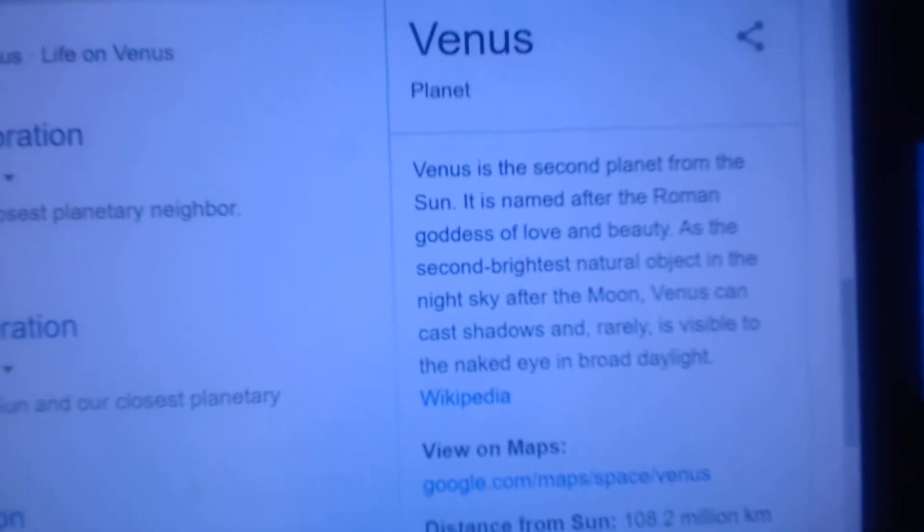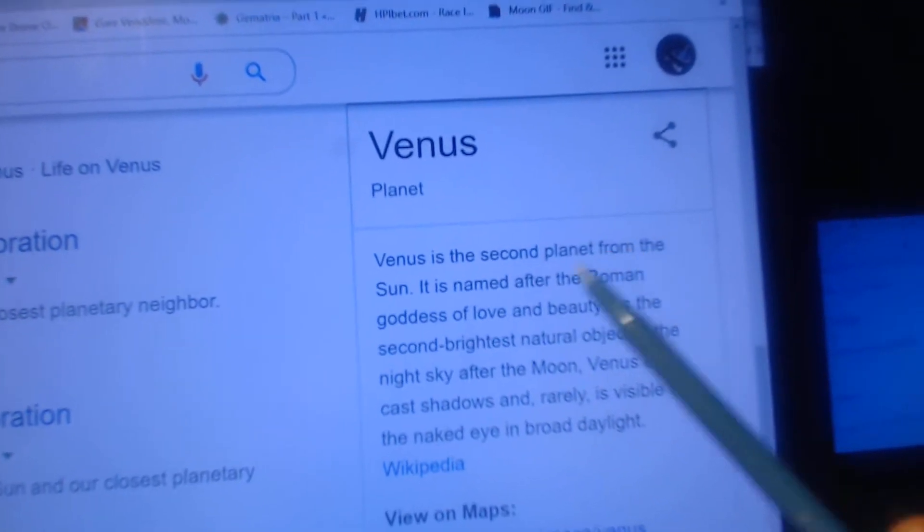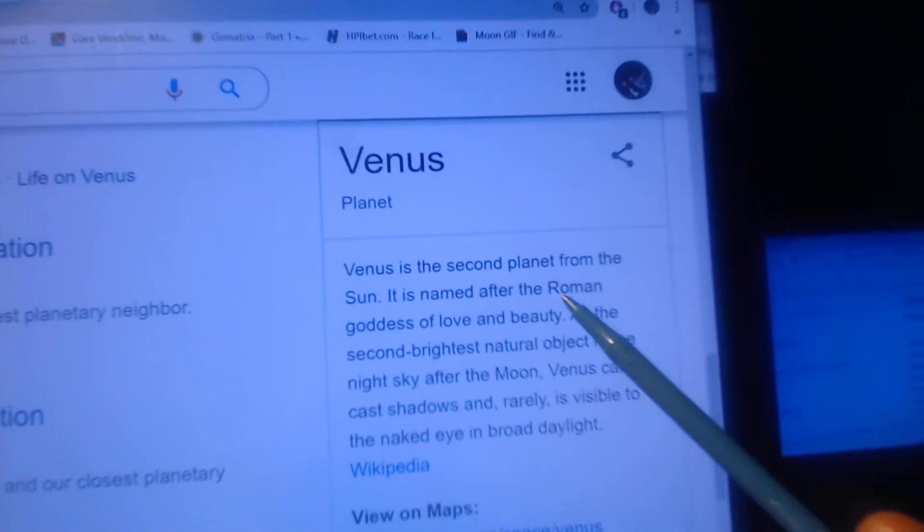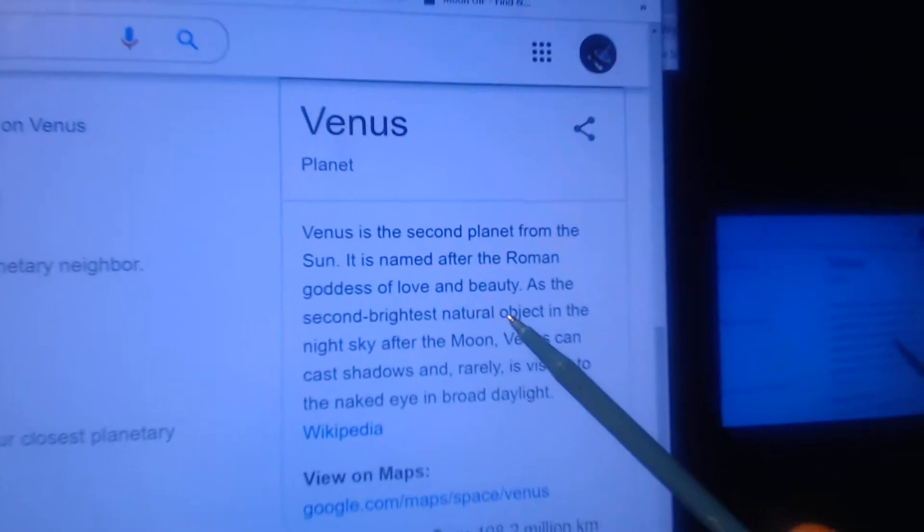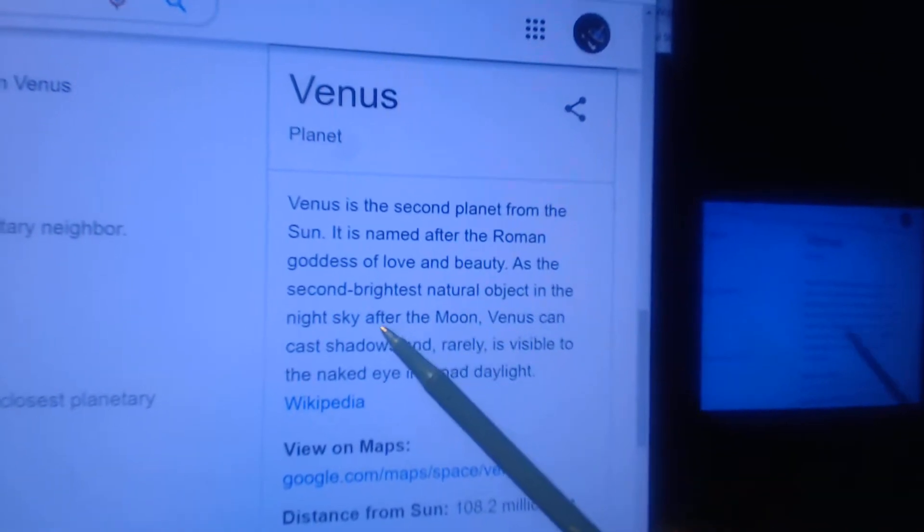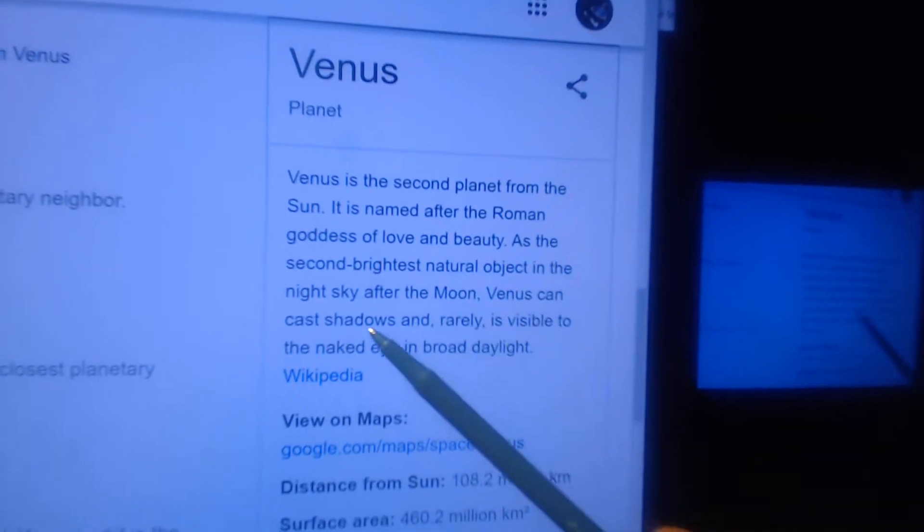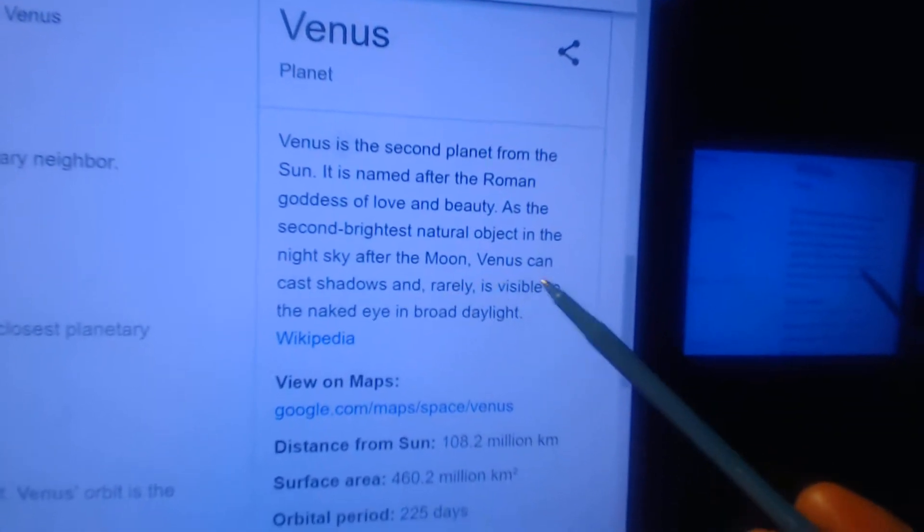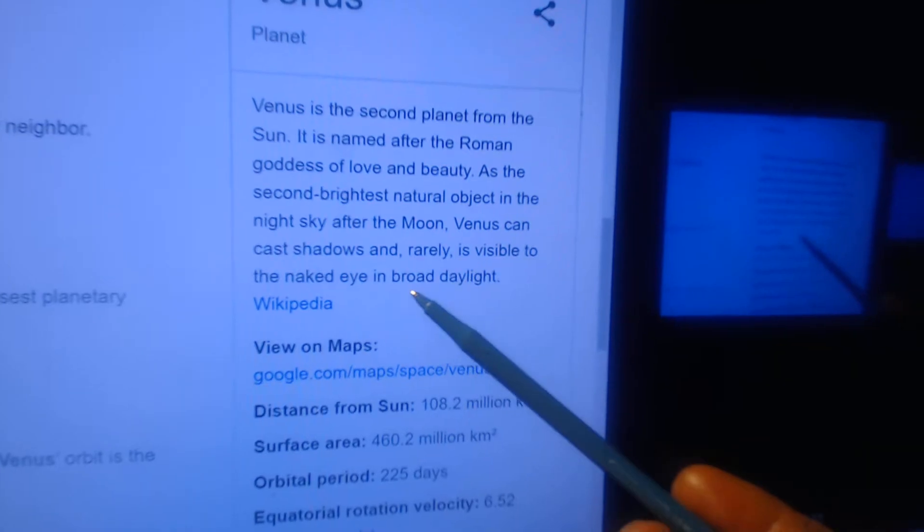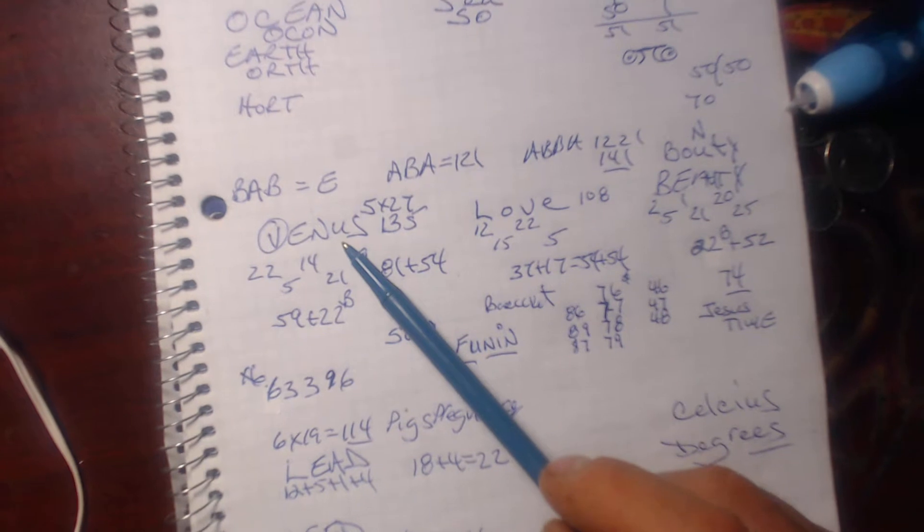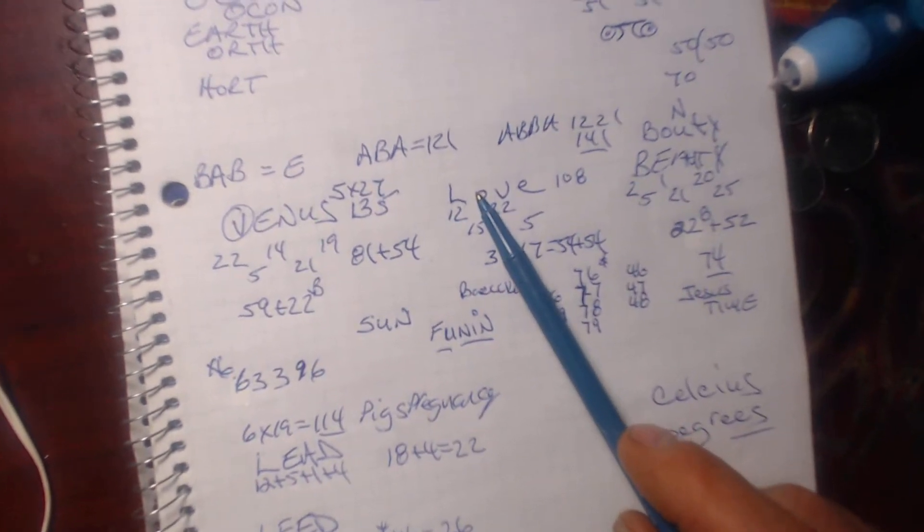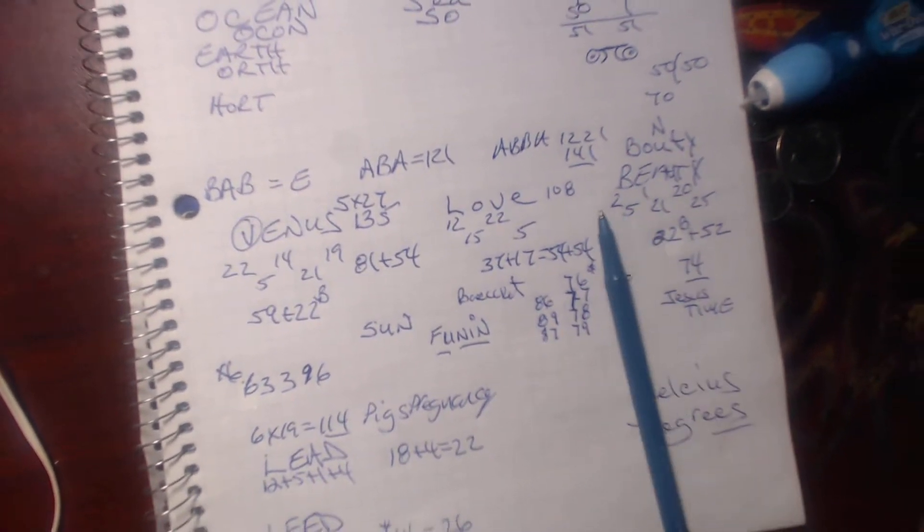Then we're going to go ahead and go into Venus as the second planet from the Sun. It is named after the Roman goddess of love and beauty as the second brightest natural object in the night sky after the moon. Venus can cast shadows and rarely is visible to the naked eye in broad daylight. I've seen it a few times. So we're going to take Venus, we're going to take love, and we are going to take beauty.